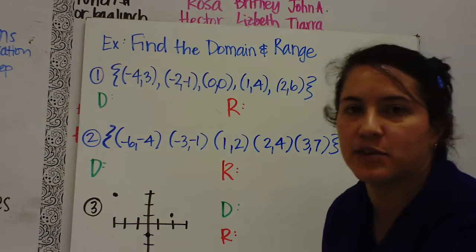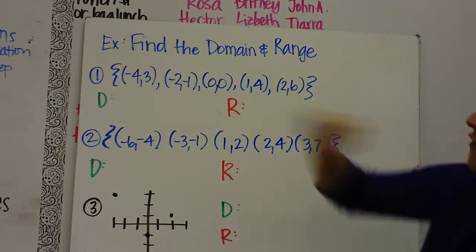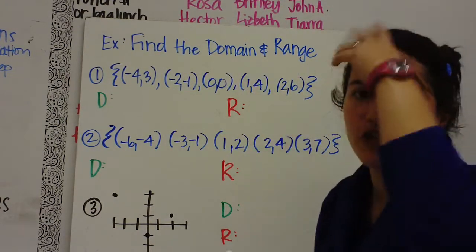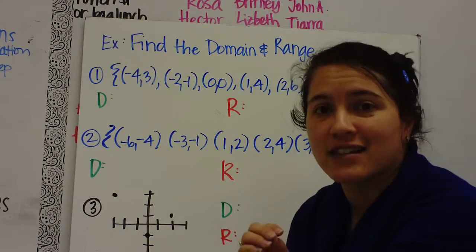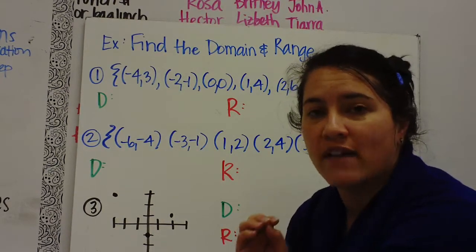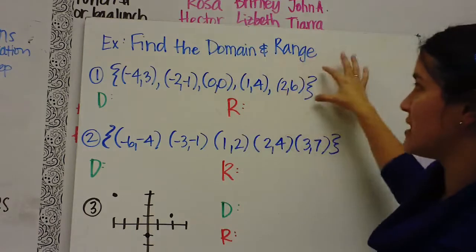Alright, so write these examples down. Find the domain and range. So I'm going to show you how to find the domain and range. The domain are the X values, the range are the Y values. So we have a relation, we have a set of ordered pairs.